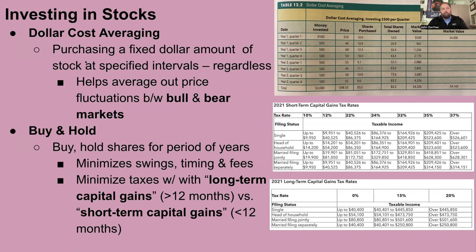Another strategy is buy and hold. This goes with dollar cost averaging — we're talking about putting the money in and letting it be. Whether you spread it out over a year or do it all at once, it'll buff out in the end. The important thing is, once you put it in, you let it be — don't touch it. If you're buying and selling constantly, each time you are paying a transaction fee, and you're probably paying taxes. You'll pay a higher tax rate if you don't hold your securities for at least one year.